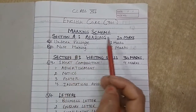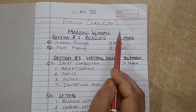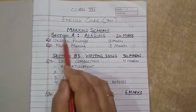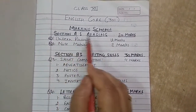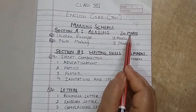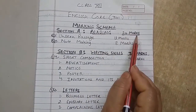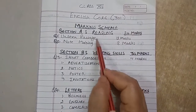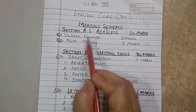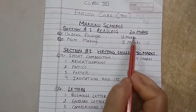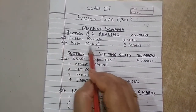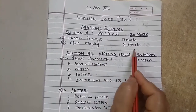Your question paper will be of 80 marks and these 80 marks are divided into 3 sections. The first section is Section A, that is the reading section. The reading section is of 20 marks and for these 20 marks, you will get 2 questions. Question number 1 is unseen passage and this unseen passage is of 12 marks. Question number 2 is note making and this note making is of 8 marks.